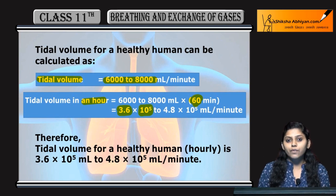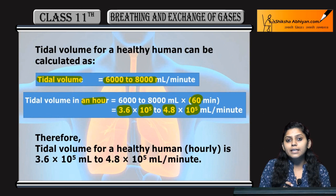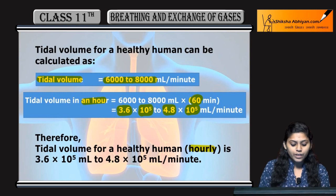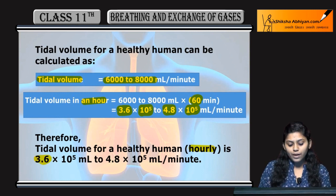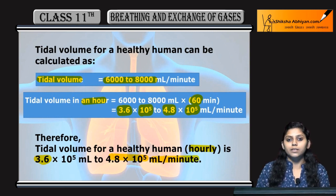So the hourly tidal volume for any healthy human is approximately 3.6×10⁵ to 4.8×10⁵ ml of air per hour.